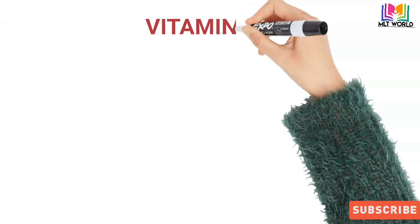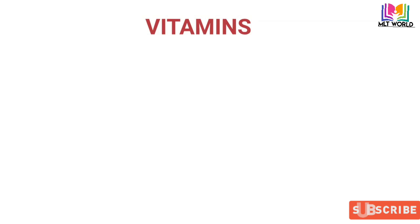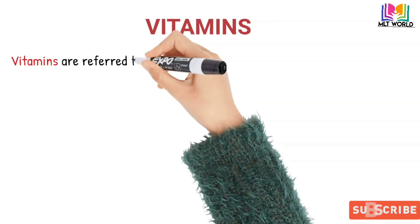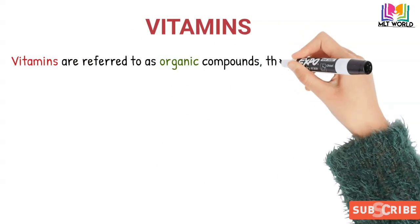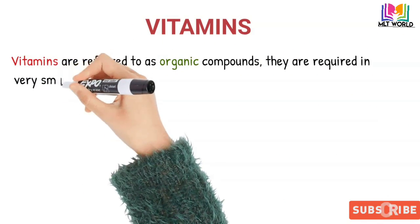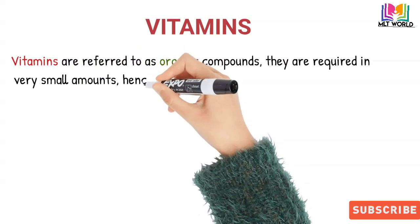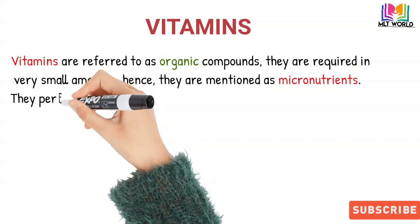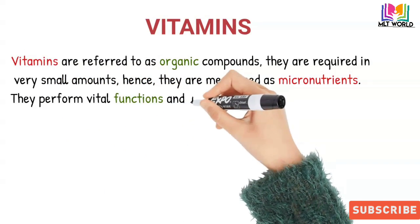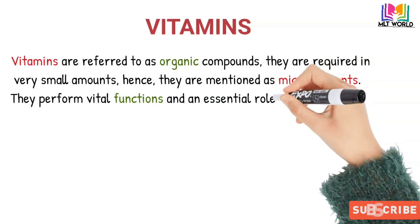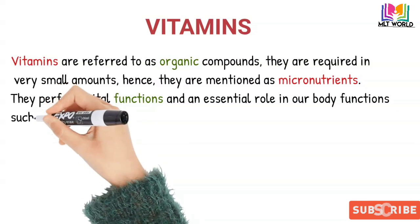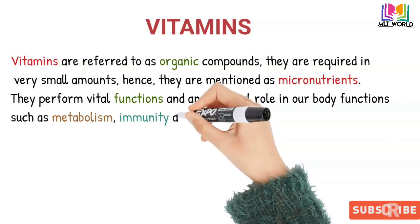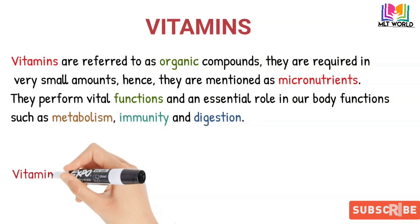First, we will understand what vitamins are. Vitamins are compounds that are required in very small amounts by our body, but they play a very important role. The deficiency of vitamins is also the cause of many diseases. Vitamins are referred to as organic compounds, required in very small amounts — hence they are mentioned as micronutrients — and they perform vital functions in our body.